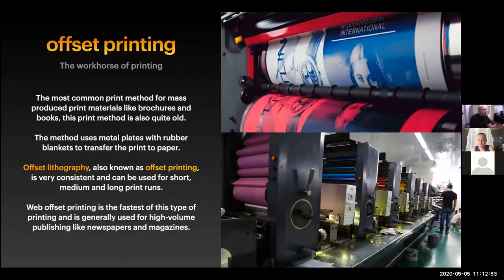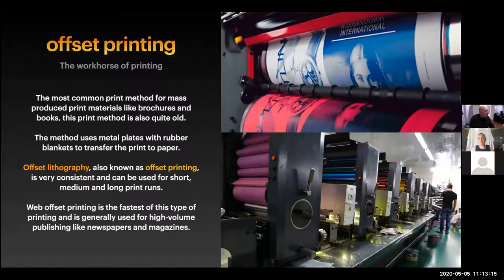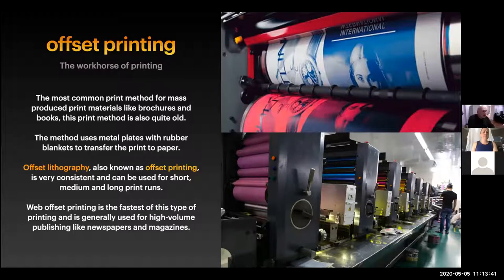Offset printing — this is the workhorse of printing. Pretty much everything you see in magazine racks and what you get in your mailbox is likely printed on an offset printing machine. It's the most common print method for mass-produced print materials like brochures and books, and it's quite old. This method uses metal plates with rubber blankets to transfer the print to paper. The plate is that blue and white image on the roller — it's a flexible plate with an emulsion.